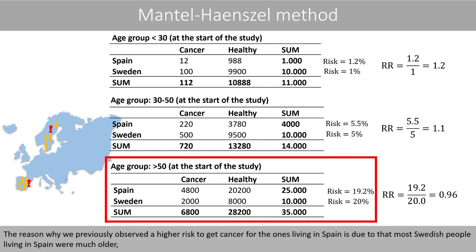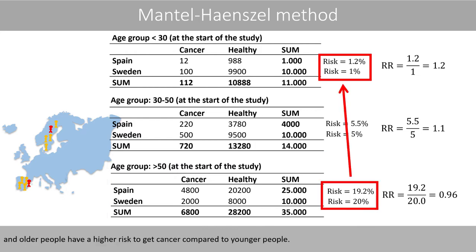The reason why we previously observed a higher risk to get cancer for those living in Spain is that most Swedish people living in Spain were much older, and older people have a higher risk to get cancer compared to younger people.